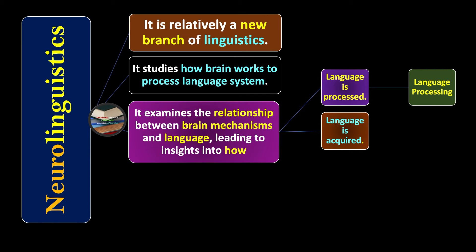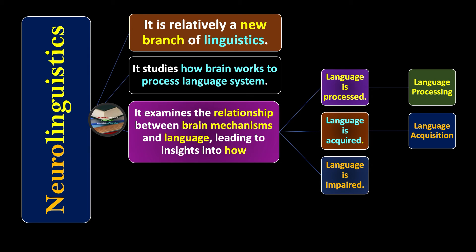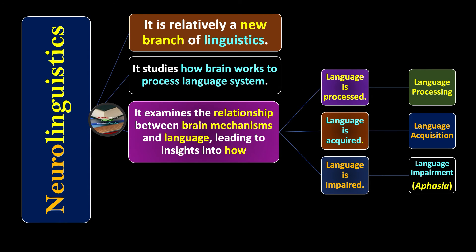How language is acquired refers to language acquisition. How language is impaired refers to language impairment, known as aphasia. Aphasia is a branch of neuro linguistics in which we study the disorder of language — when something goes wrong in the brain or the brain is damaged, one may suffer from a language disorder. This area of study is known as aphasia.